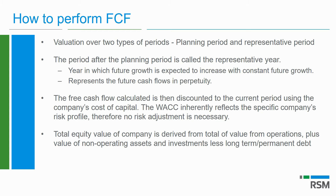The first period is referred to as the planning period — that is next year or this year, when you need to incur certain once-off costs, get your working capital right, and get your property, plant and equipment ready. After the planning period comes the representative year, which represents the future steady-state period. We take that period and value its cash flows into perpetuity — the assumption is that the business will be able to produce that cash flow forever. The free cash flow is then discounted to the current period using the company's cost of capital.